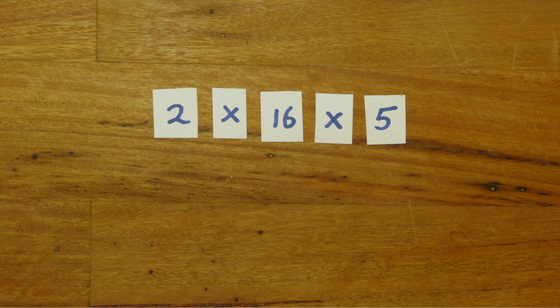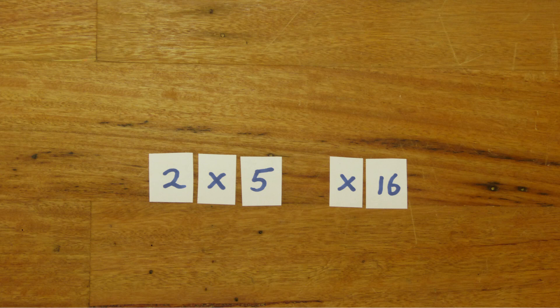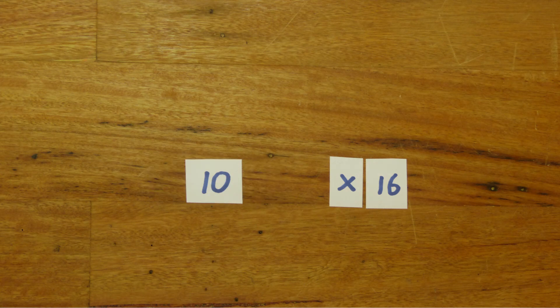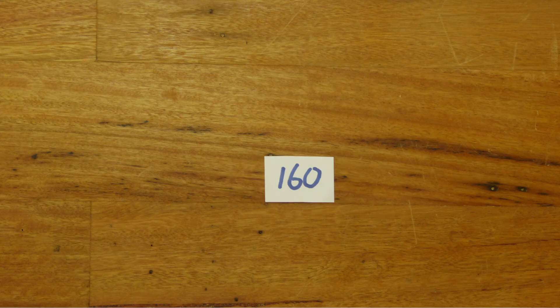Example, what is 2 times 16 times 5? Let's group the 2 and 5 as they multiply to 10. The 2 and 5 weren't even next to each other. That is okay as they are all multiplies.